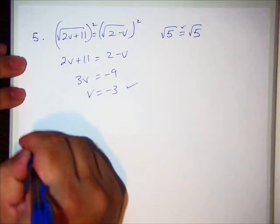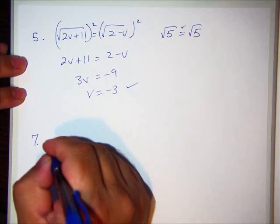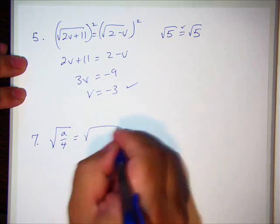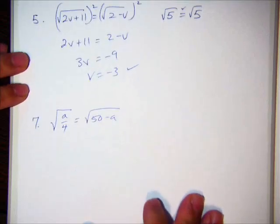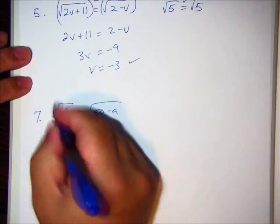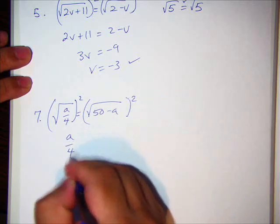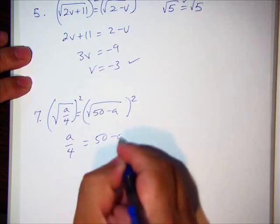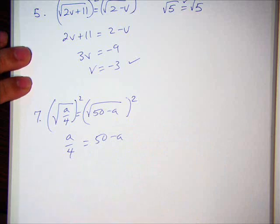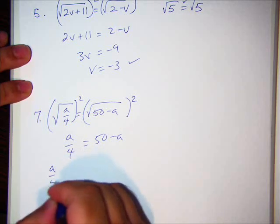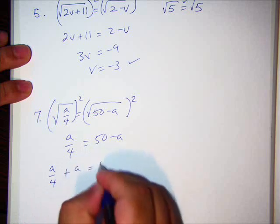Again, we have radical equal radical. So we're just going to square both sides. A/4 = 50 - A. I'm going to add A to the left. All right. Here. Let me write it down. I'm adding A to the left.